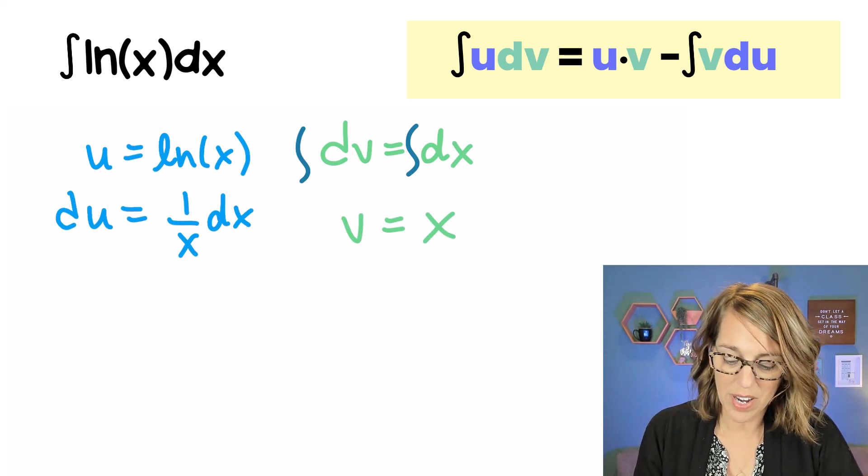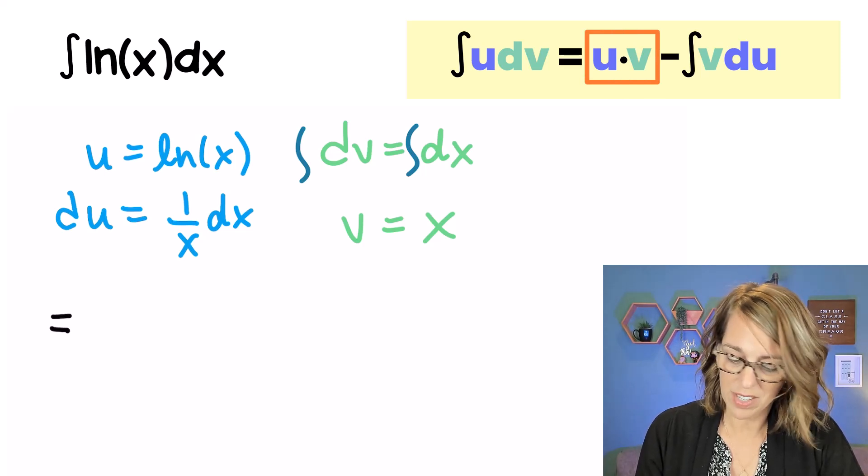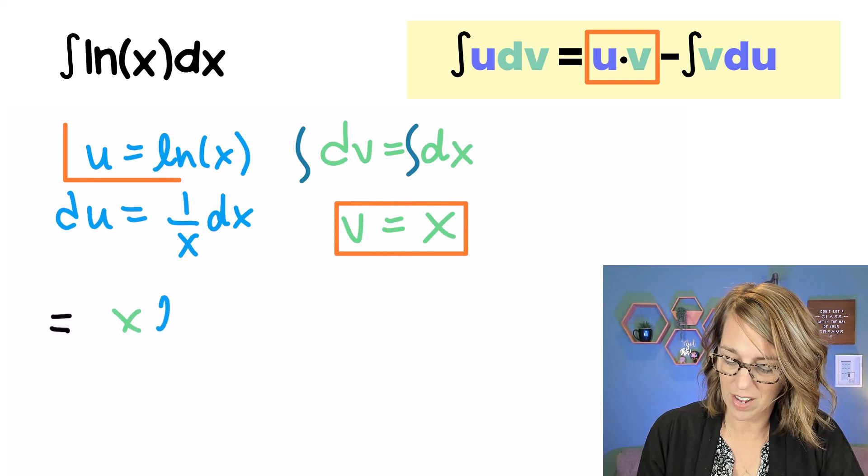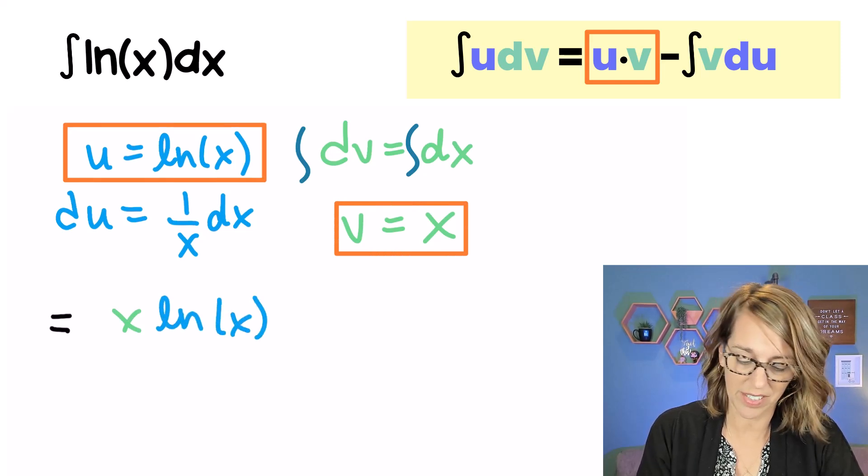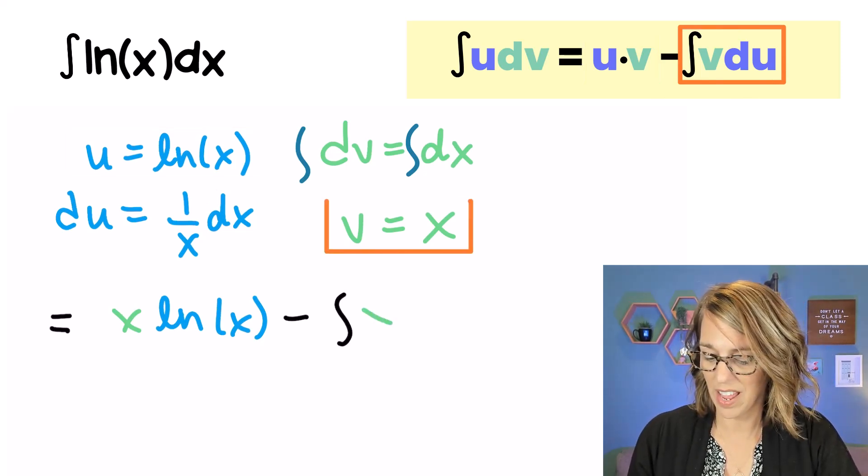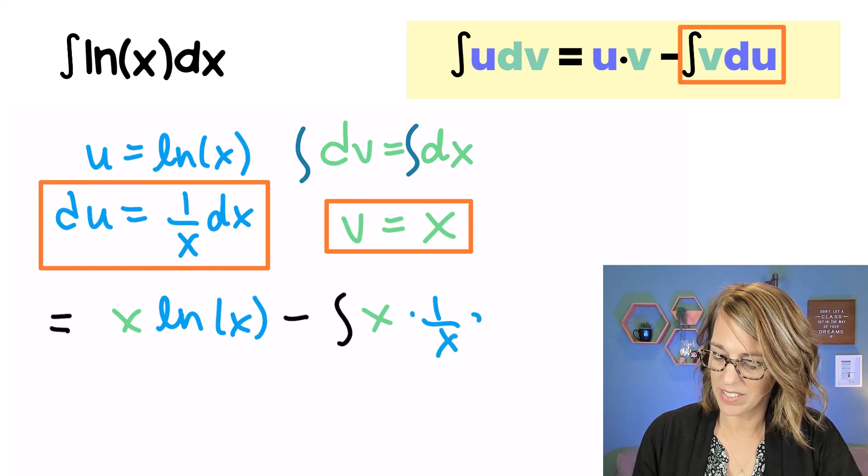Let's apply that formula. So our integral becomes u times v. u times v is going to be an x. I'm going to put v first times the natural log of x. And then I want minus the integral of v. v is x du. And du is 1 over x dx. This really works out so nicely. I can cancel these x's.